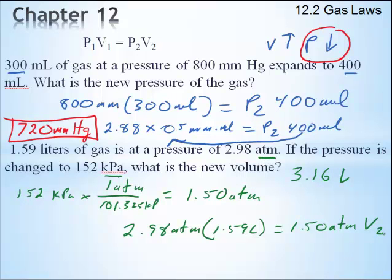Now, before we do anything, let's just ask ourselves, what should happen? The pressure's going from 2.98 to 1.5. So the pressure is going up.